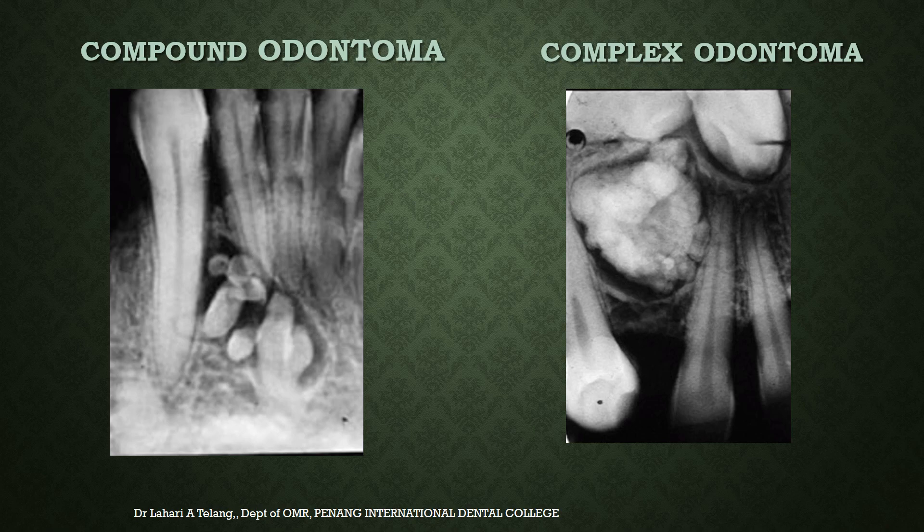Compound and complex odontomas: compound odontomas resemble tooth-like structures and on the radiograph you may be able to differentiate enamel, dentine, and pulp within the odontoma itself. Complex odontomas are irregular masses of deposition without a recognizable shape, making it very difficult to identify enamel, dentine, and pulp. Both types can cause impaction of teeth — in this case, an impacted canine with the complex odontoma obstructing its path of eruption.